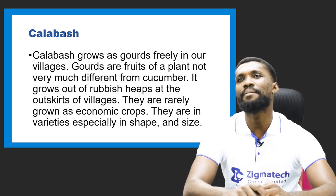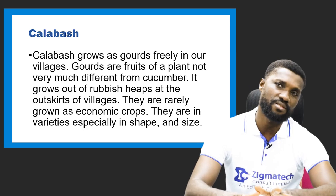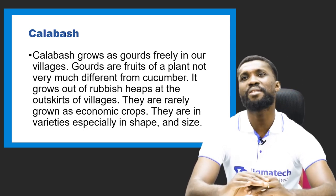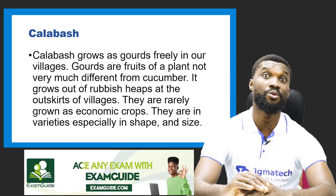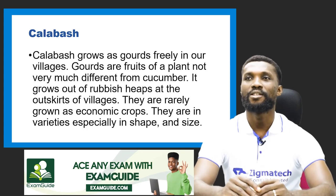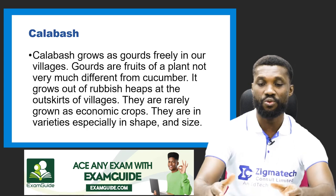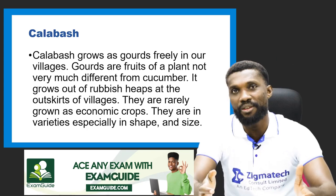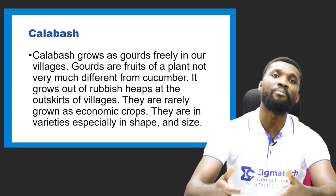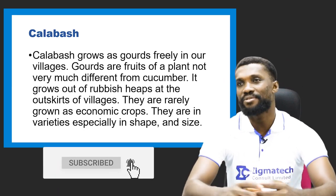Calabash grows as a gourd freely in our villages. Gourds are fruits of plants not very much different from cucumber — we all know cucumber. The calabash is not far different from the cucumber, the melon, watermelon, or even the egusi. They look alike; they're in the same family.